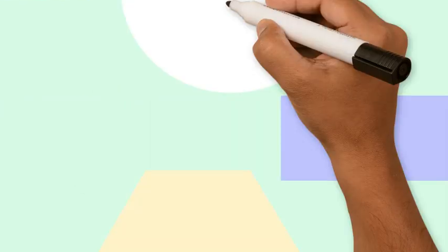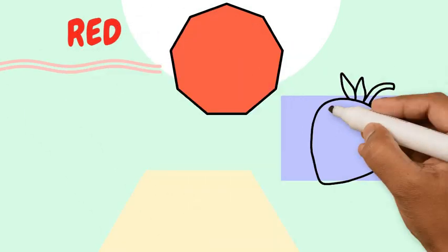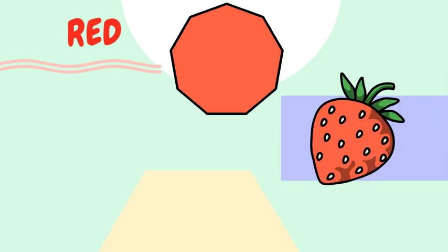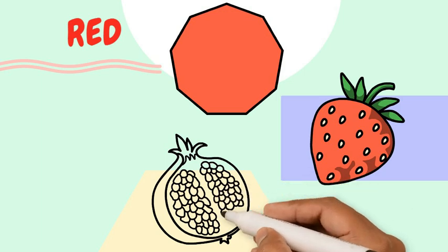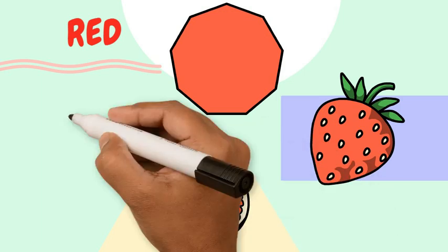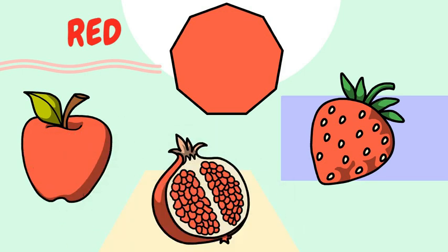First of all, this is red color. Let's see some things which are in red color. Yes, strawberry, pomegranate, and apple. Say with me: red color.